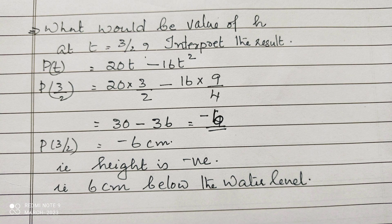That means p(3/2) = 20 × 3/2 - 16 × (3/2)². That is 9/4, cancelling 2 and 4.